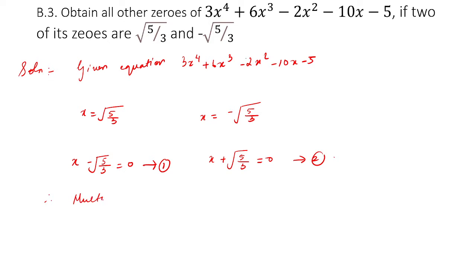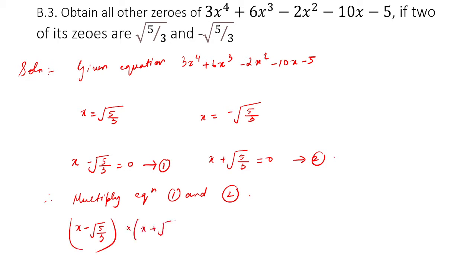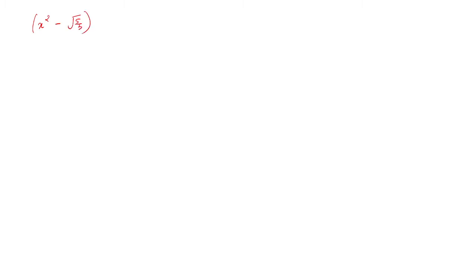When you multiply equation 1 and equation 2, we get x minus root 5 by 3 into x plus root 5 by 3 equals 0. This is in the form of a minus b times a plus b, which equals a squared minus b squared. So this becomes x squared minus root 5 by 3 whole squared, which gives x squared minus 5 by 3 equals 0. Taking LCM, this becomes 3x squared minus 5 equals 0.